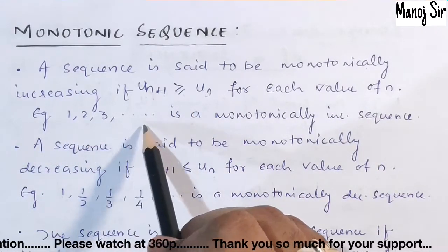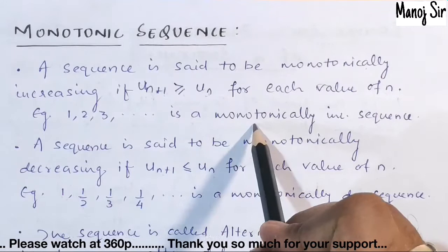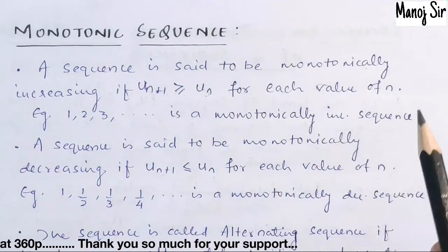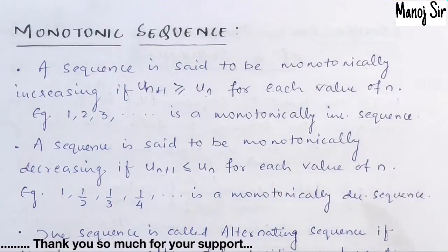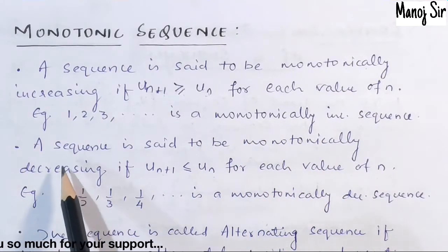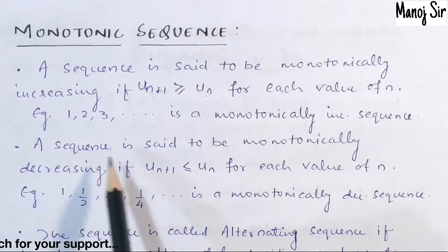For example, 1, 2, 3, 4, ... is an example of a monotonically increasing sequence.